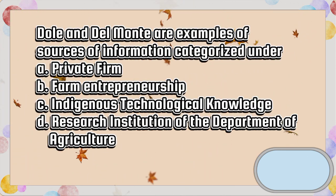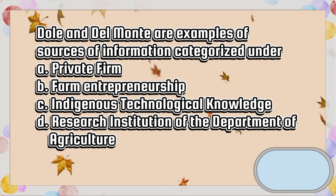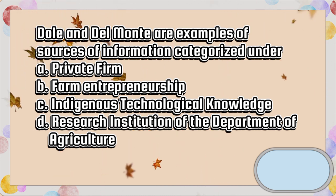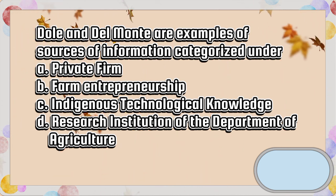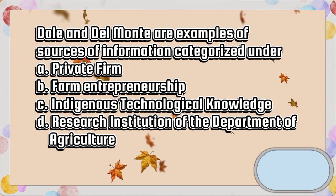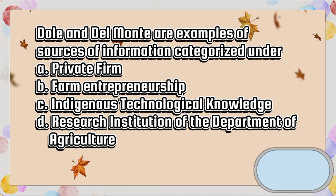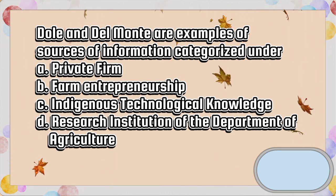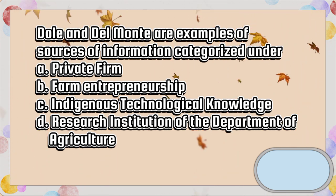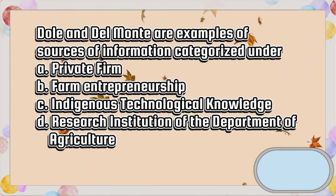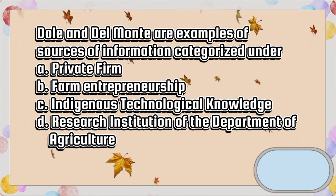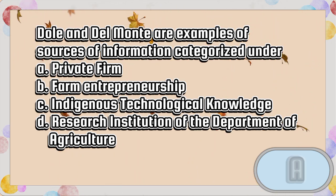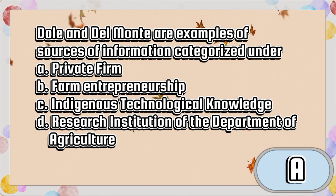Dole and Del Monte are examples of sources of information categorized under: A. Private firm, B. Farm entrepreneurship, C. Indigenous technological knowledge, D. Research institution of the Department of Agriculture. The answer is letter A.